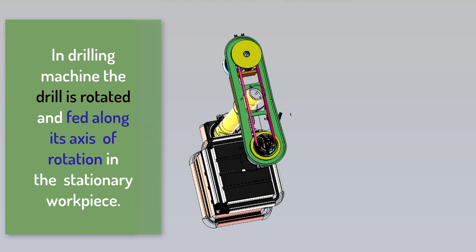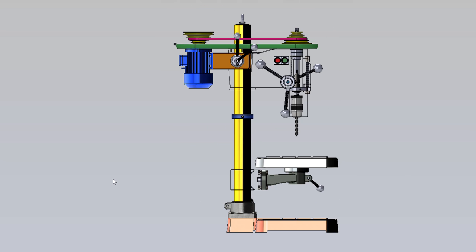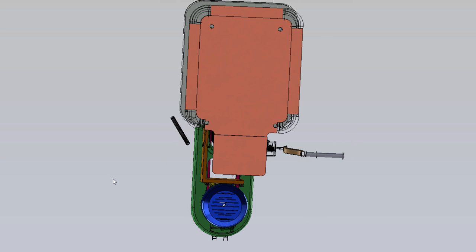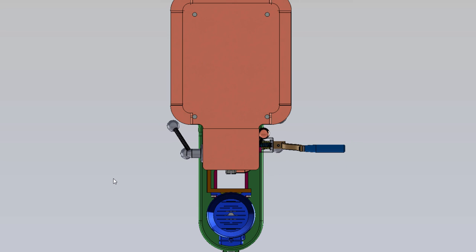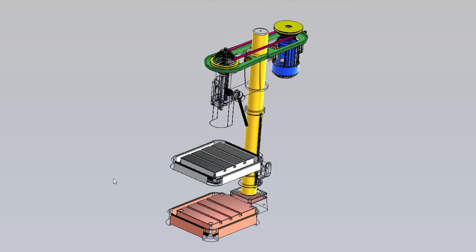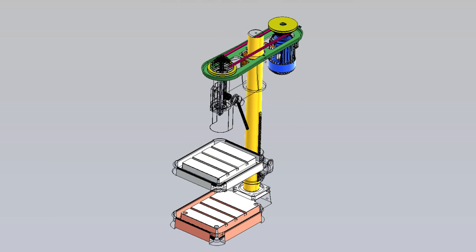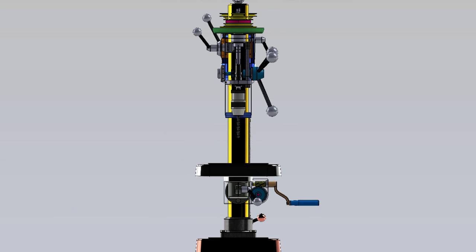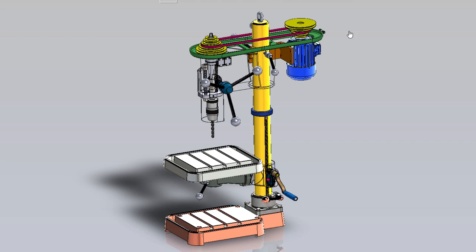A drilling machine is a machine tool designed for drilling holes in metals. It is one of the most important and versatile machine tools in a shop. Besides drilling round holes, many operations can be performed on drilling machines such as counter boring, counter sinking, honing, reaming, lapping, sanding, etc.